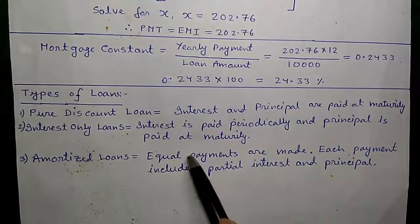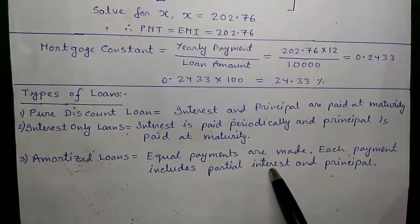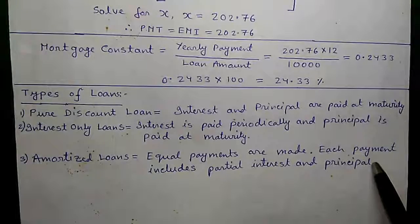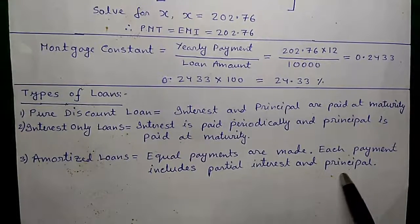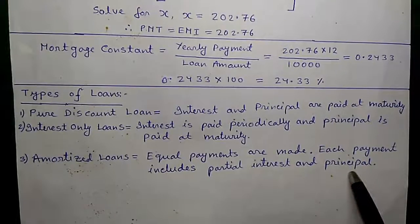Third is amortized loan where equal payments are made. Each payment includes partial interest and principal. Example: home loan where you will pay per month EMI that will include some portion of interest and principal.